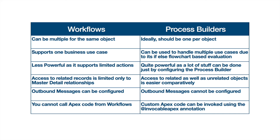Process builders can create records, update records, update related records, call custom Apex code, send notifications, send records for approval, and more. In workflows, updating a related record is limited to master-detail relationships only — for example, a COVID count workflow rule can only update the contact object. But in process builder, you can update or create any object, related or unrelated. The one advantage workflows have is outbound messages — these can only be configured in workflows, not in process builders.